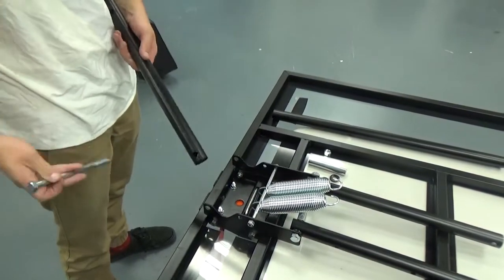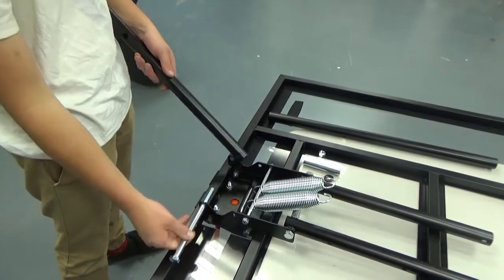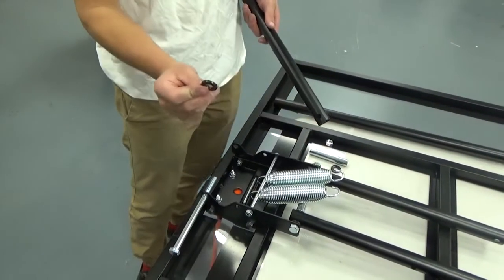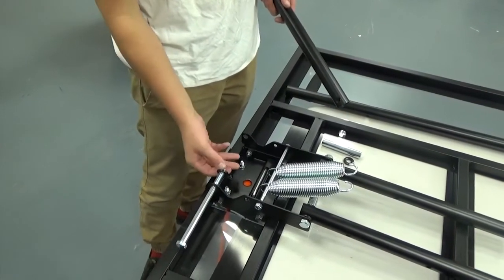Next, attach the long extension arms to the backboard brackets. Again, check the orientation of the extension arms to ensure the correct end is facing the backboard.